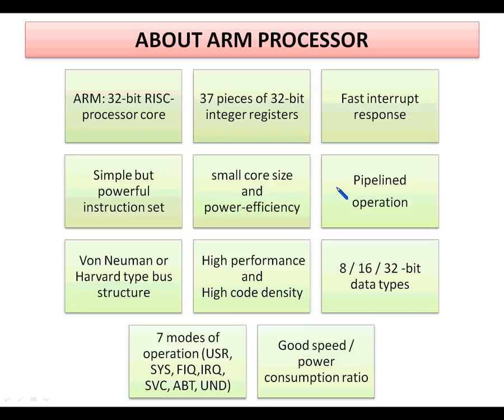Pipelining is a very effective way of exploiting concurrency in a general purpose processor. A processor core is organized so that as soon as one instruction has completed step 1 and moved on to step 2, the next instruction begins step 1, so the clock cycles are utilized effectively. ARM supports 3-stage, 5-stage, 6-stage, 8-stage, and 13-stage pipeline operations.